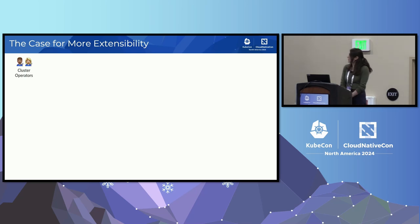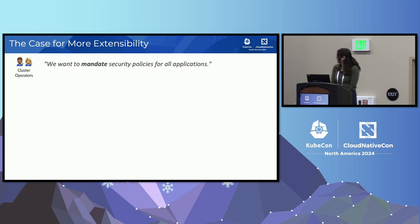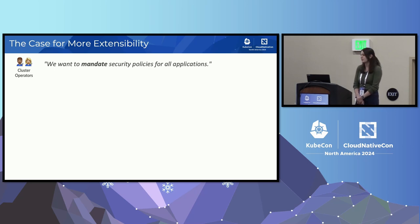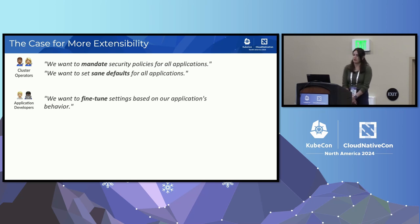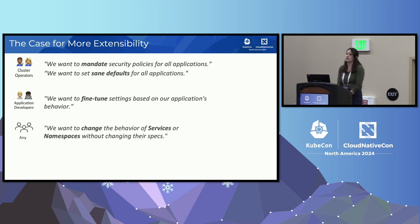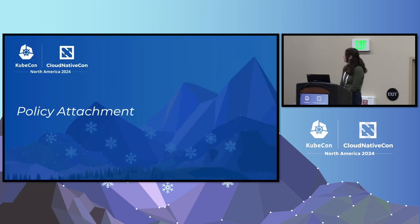What else do we need? Let's say I'm a cluster operator in control of setting up the cluster for all the application developer teams. I want some measure of control over the entire system — I care about security, I want to mandate security policies for all applications. I also want to set some sane defaults to make it easier for app teams to roll out. Or I'm an application developer who knows my application better than the cluster operator, and I want to fine-tune the settings the cluster operator has defined for me. Maybe any of these roles want to change the behavior of services or namespaces without changing the spec. Can we get more extensibility without sacrificing portability? That's where policy attachment comes in.